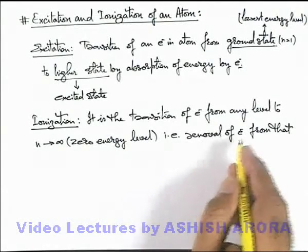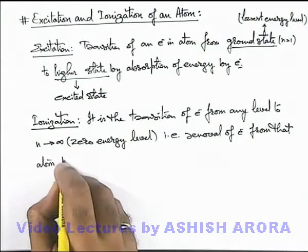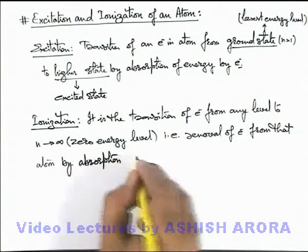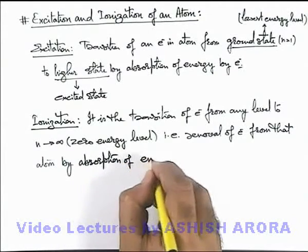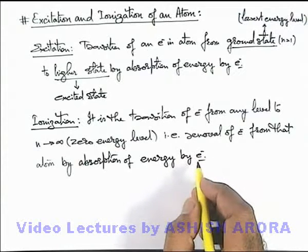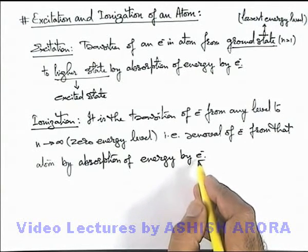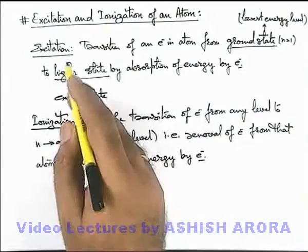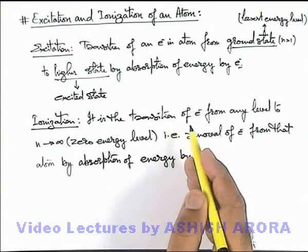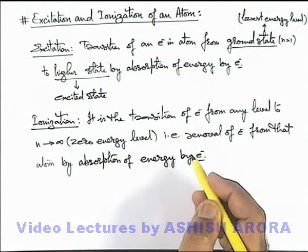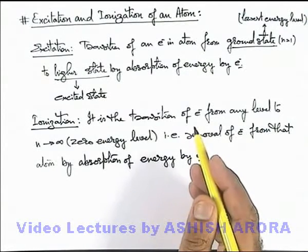So ionization is the removal of the electron from the atom, by absorption of energy by the electron. When externally supplied energy is sufficient enough to remove the electron from the atom, this phenomenon is called ionization. And excitation is just the transition of the electron from any lower level — in a hydrogenic atom from ground state or n equal to 1 — to any higher energy level.